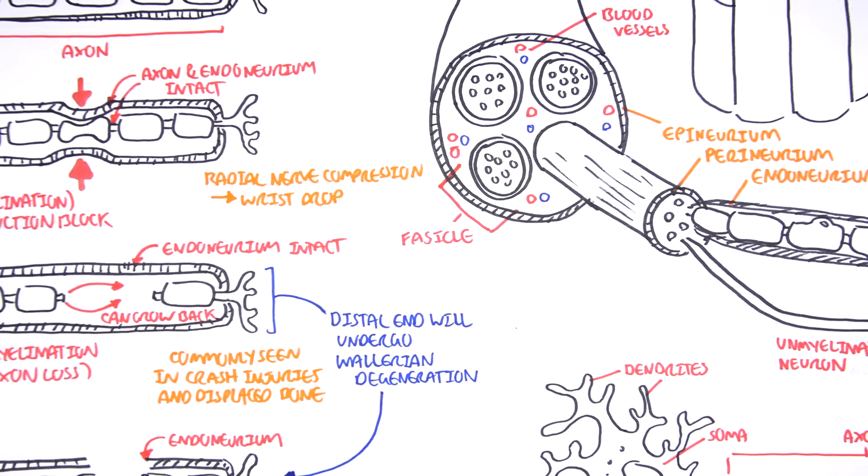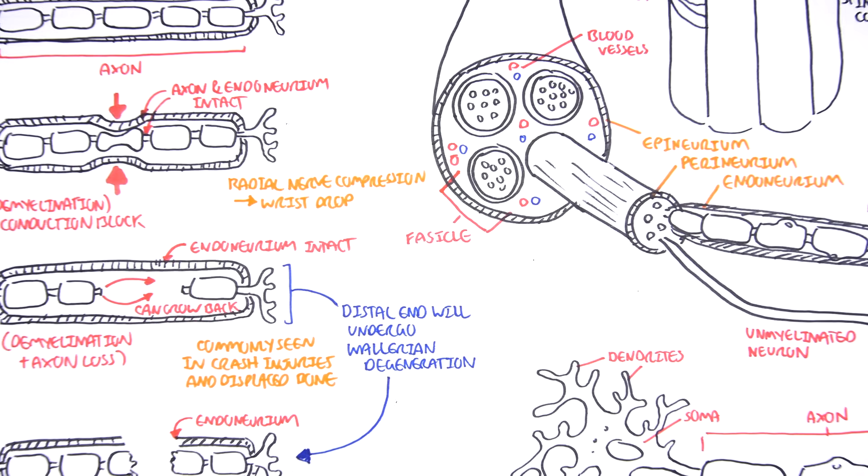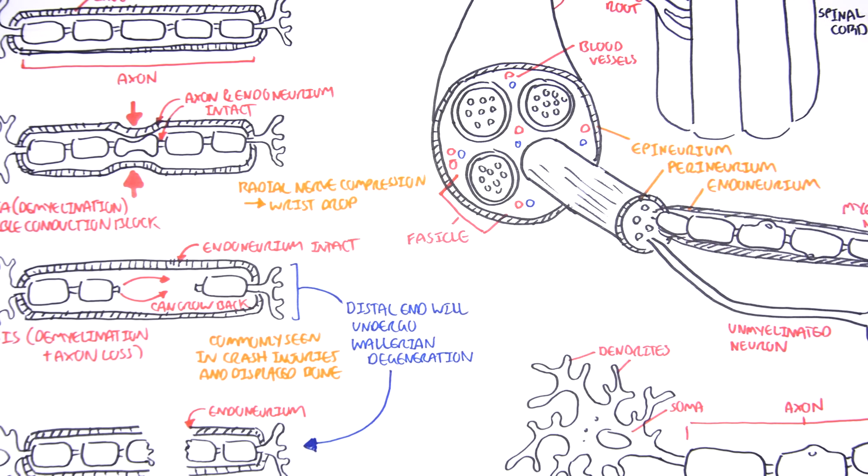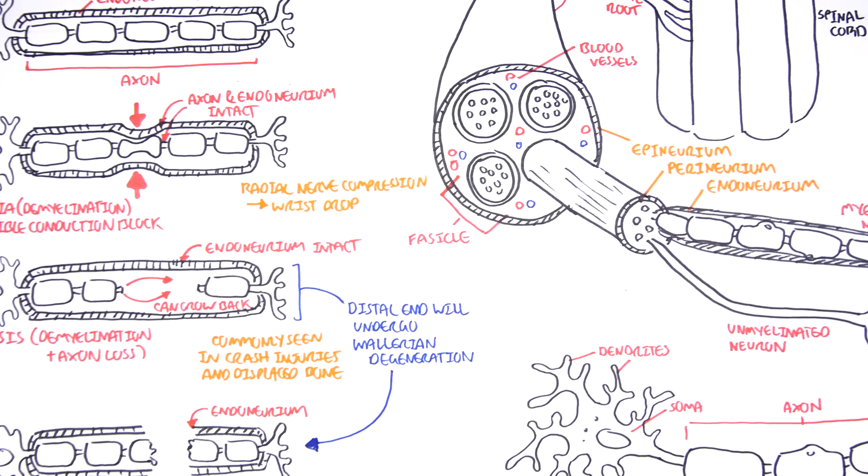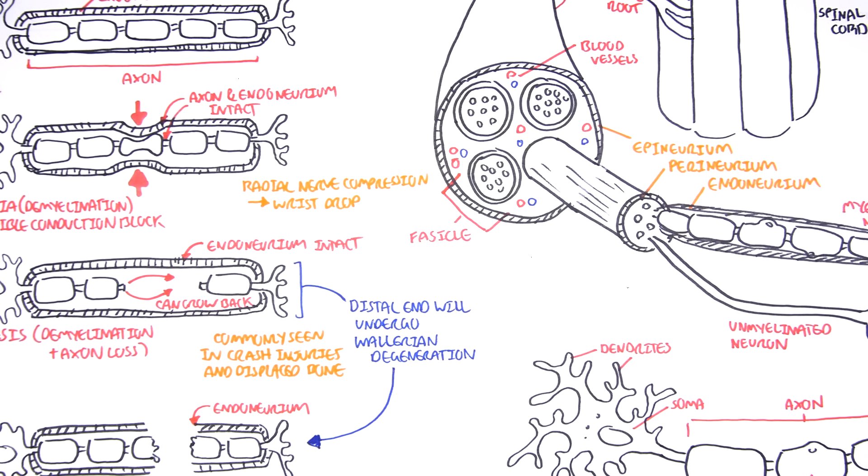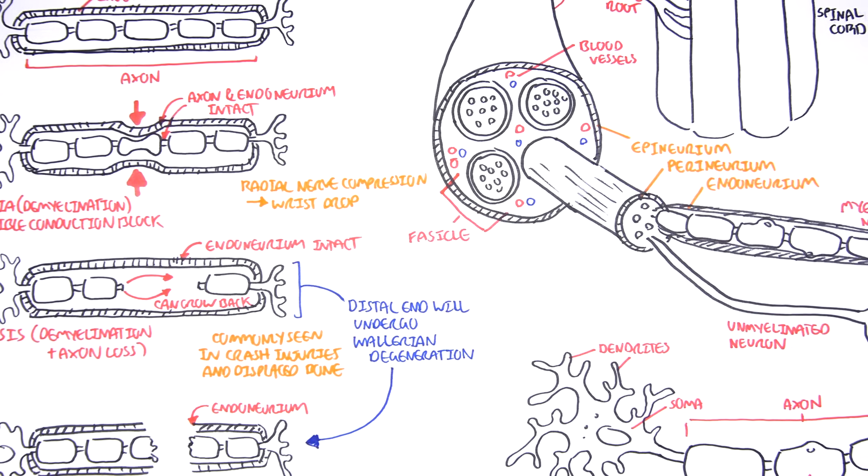Okay, so I hope that made sense. So, remember the three types of nerve injury. You have neuropraxia, axonotmesis, and neurotmesis. Thank you for watching. Like.